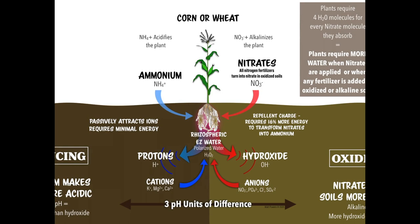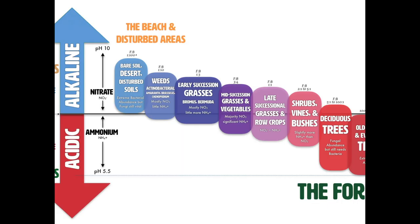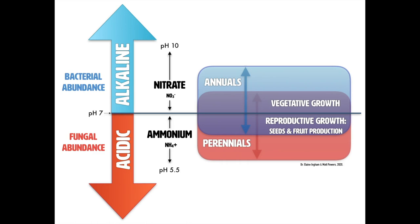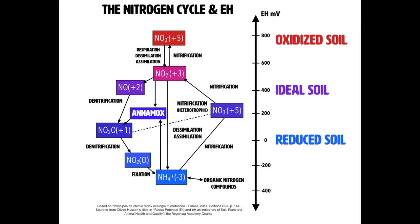Almost everything is like this: we need enough to survive and thrive, but too much kills us. We are like Goldilocks — we need it just right. When we look at the nitrogen cycle according to EH, it's that swing of oxidized to reduced that gives us diversity, just like in pH. It's differentials, microbiology, a diversity of aerobic, facultative, and even anaerobic microbes, because natural soils have anaerobic pockets here and there.